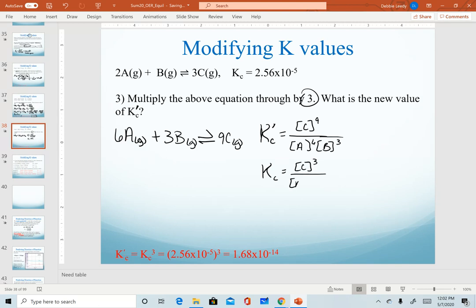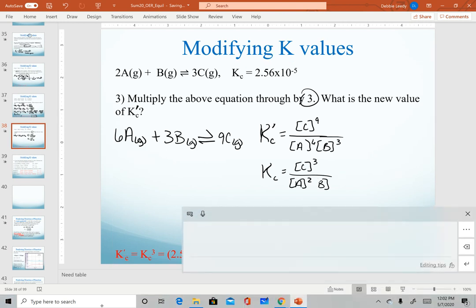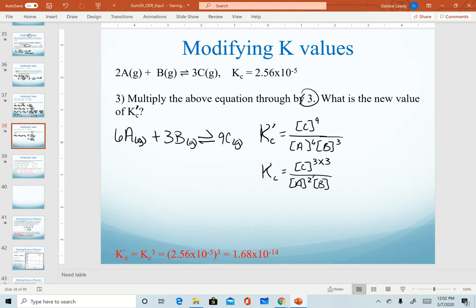Now if I compare this to my original equation from up above, my C is cubed in the original. A is squared. And B. Notice what I've done is I essentially multiplied each of my exponents by the value that I multiplied by. And so in short, my new K value is Kc, where each quantity, the exponent of each one is multiplied by three, which means my overall K value then gets raised to the third power.